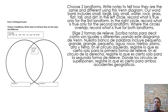Choose two landforms and write notes to tell how they are the same and different using this Venn diagram. Our word bank includes: small, large, big, water, rock, grass, flat, tall, and dirt. In the left circle, record what is true only for the first landform. In the right circle, record what is true only for the second landform. Where the circles overlap, record what is true for both landforms.